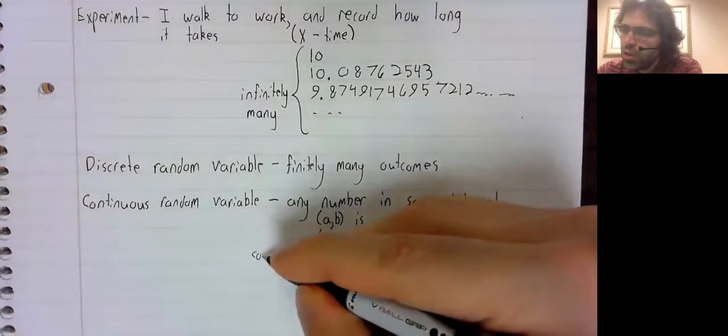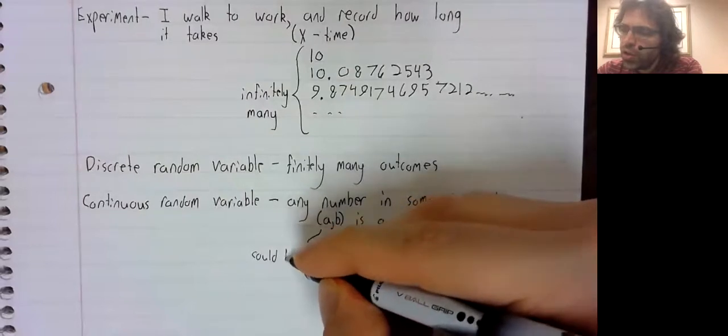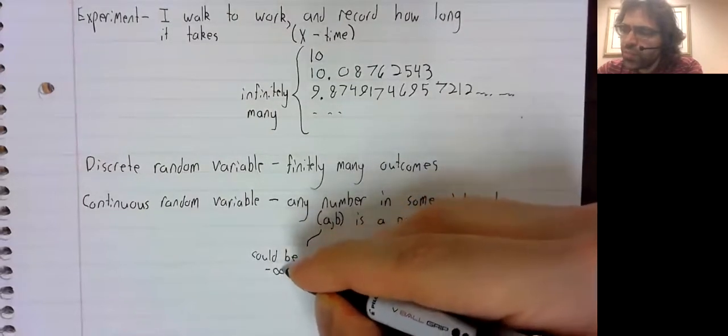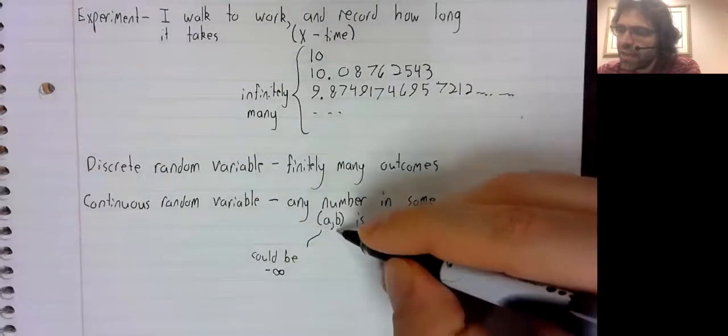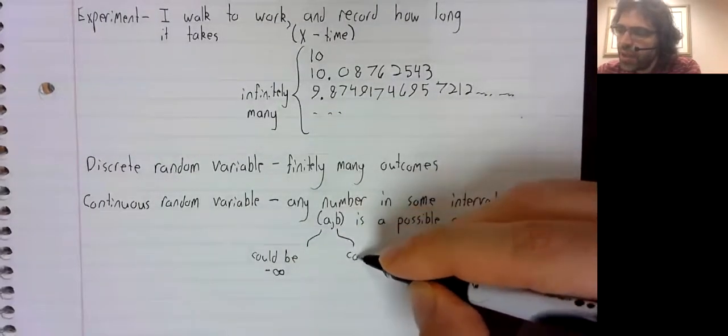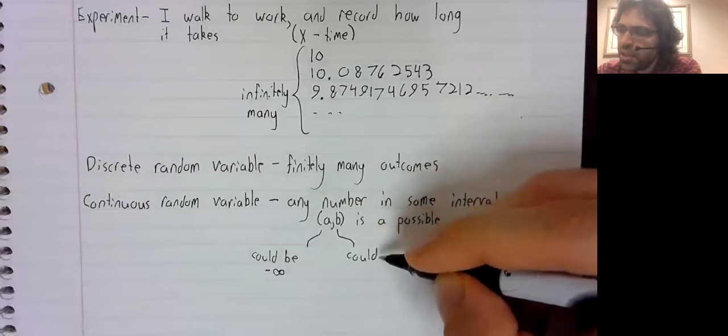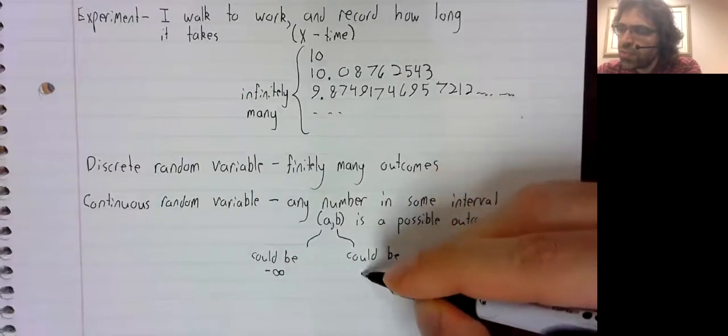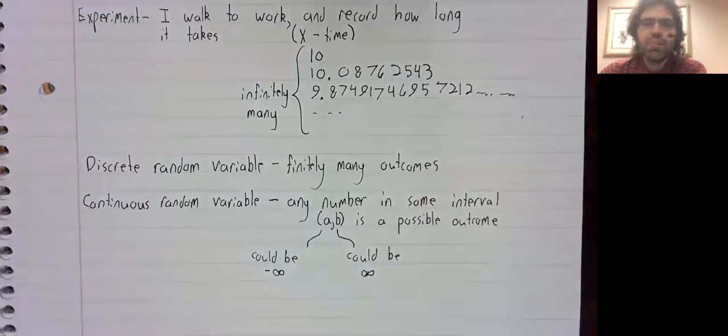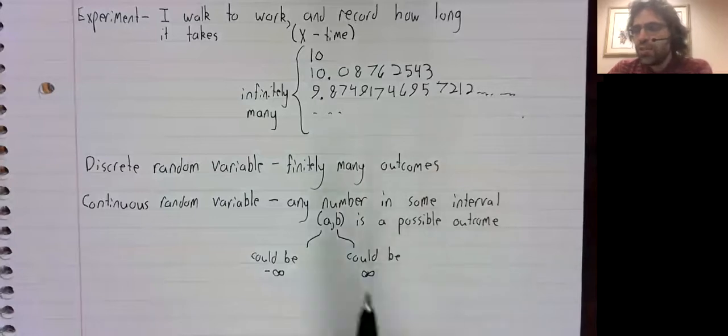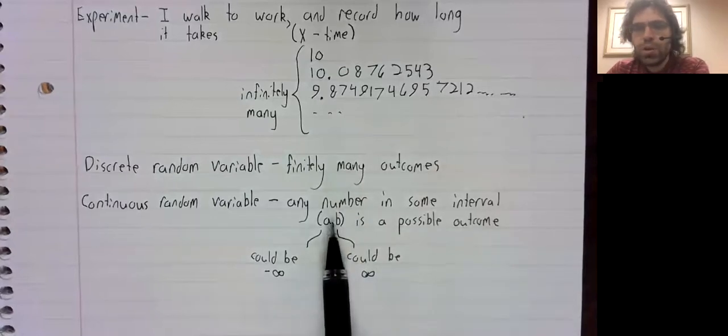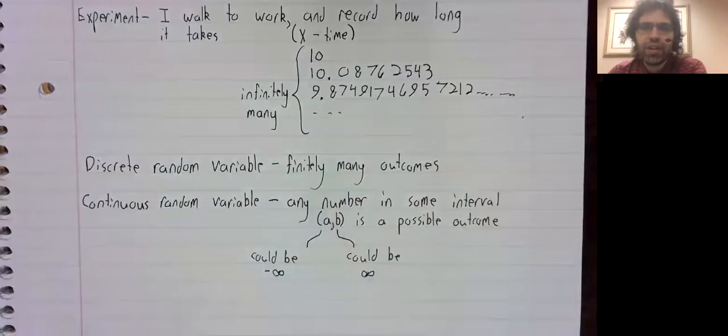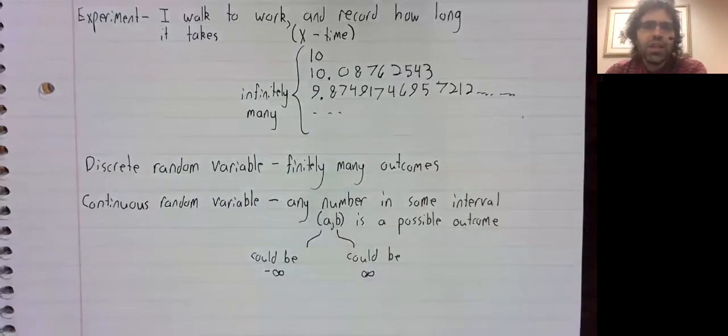Here, A could be finite, or it could be negative infinity. B could be finite, or it could be positive infinity. So this interval could be finite or infinite. And to study continuous random variables, it turns out that we need the integral.